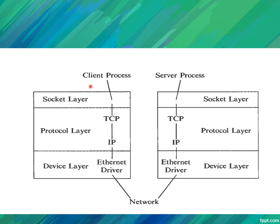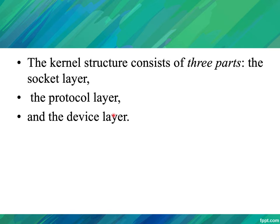In a socket program, a client process and a server process communicate by going through several layers: the socket layer, the protocol layer, and the device layer. The device layer is the Ethernet layer — every system has an Ethernet driver, and through that, the local host can be addressed and connected in the network. The protocol layer contains TCP and IP, through which the processes are accessed.